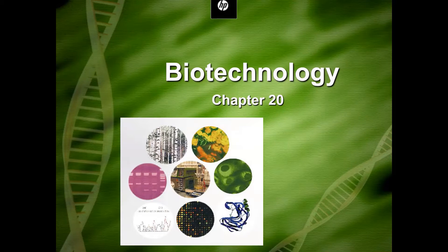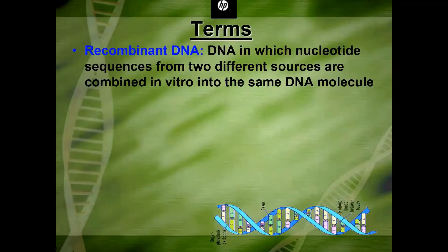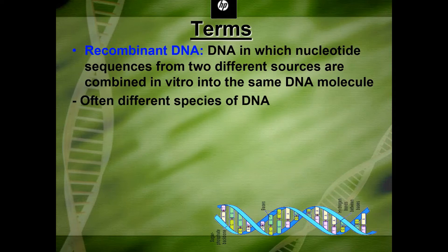One of the biggest terms we have to define is something that actually allowed us to start making advancements in biotechnology — that is what we call recombinant DNA. When it comes to recombinant DNA, it's pretty much what it sounds like: it's combining DNA from two different sources into one DNA molecule, usually done in vitro. In vitro means in a test tube or outside the body, usually in a test tube or petri dish.